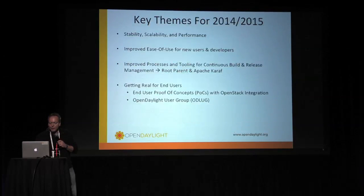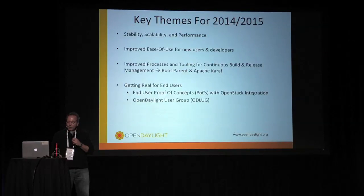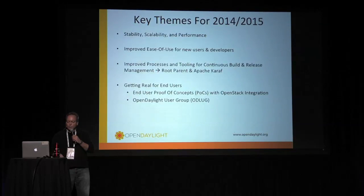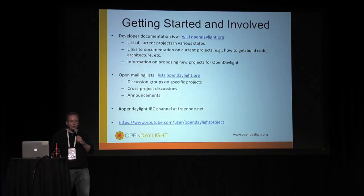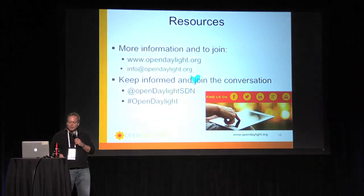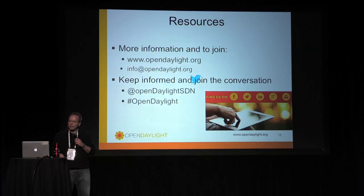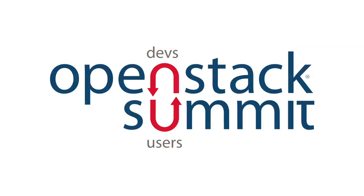Key themes for us are really around stability, scalability, and performance, as well as improved ease of use for new users and developers — you can see that with the documentation and toolkit projects. We're also improving processes for continuous build and release, and getting more work done with real users through proof of concepts and user groups. The wiki and mailing lists are the best ways to get involved. There's a YouTube channel with great intro videos, we're on Twitter and Facebook, and of course you can visit opendaylight.org. Thank you very much for your attention.